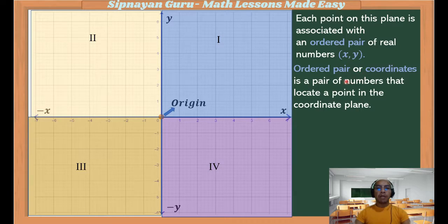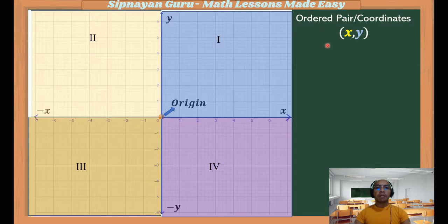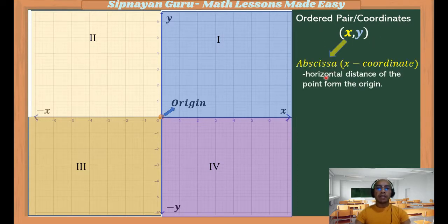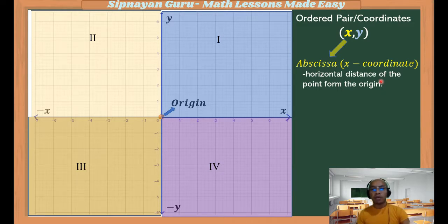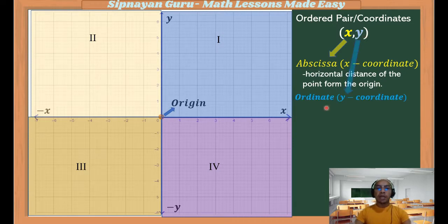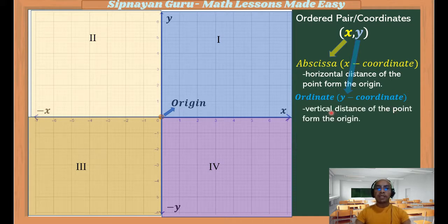An ordered pair or coordinates is a pair of numbers that locate a point in the coordinate plane. In an ordered pair (x, y), x is also known as the abscissa — the horizontal distance of a point from the origin, or the movement of the point from the origin going right or left. Going right if it is positive, going left if it is negative. The second number, y, is also known as the ordinate, or the y-coordinate, and this is the vertical distance of the point from the origin.